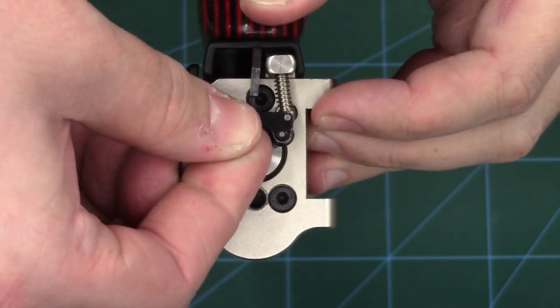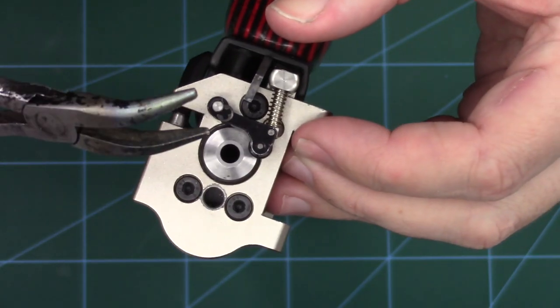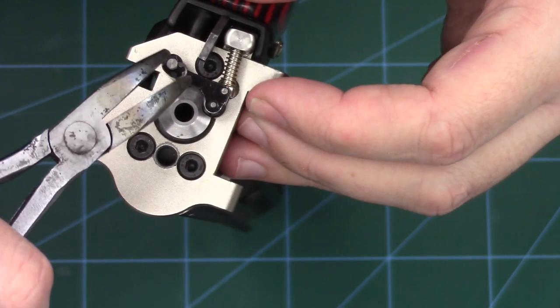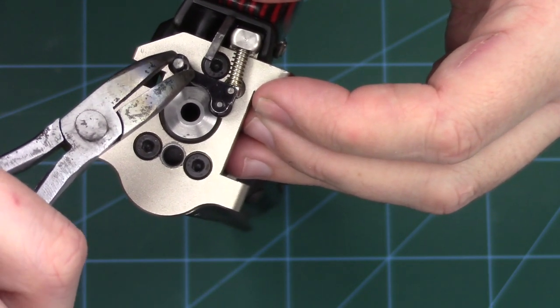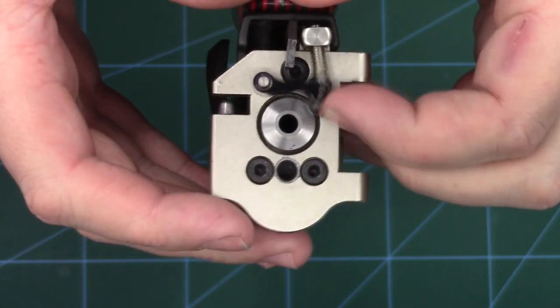Last thing we've got to do is reinstall our little circlip. And then using some flat sided pliers, just push the circlip back into its seat. And there we have it.